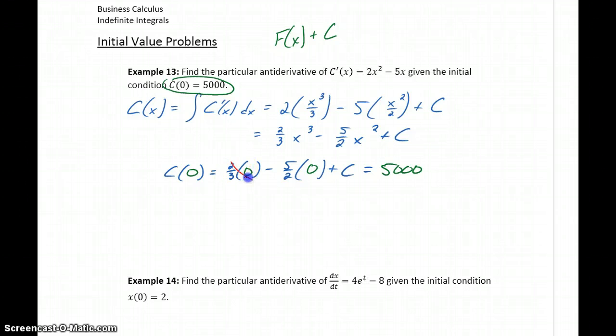So 2/3 times 0 just becomes 0. 5/2 times 0 is 0. So in this case there's not much to solve. We just get exactly c = 5000.